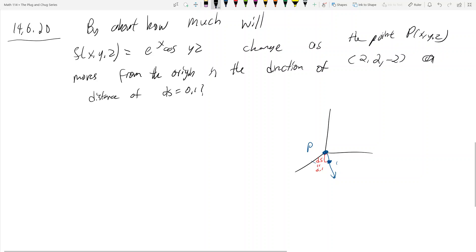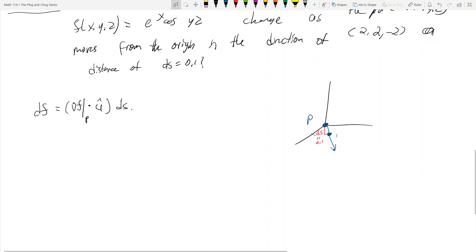Is this formula in the textbook? Of course, it's a formula in the textbook. The change in the function is called df. So the change in the function value df is equal to the gradient of f evaluated at the point p dotted with u hat, because it has to be a unit vector, and then we multiply that by ds. So really simple.